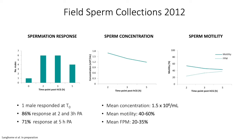Sperm concentration averaged around 1.5 million per male across the collection period, similar to the captive population. Motility was between 40 to 60%, with 20 to 35% exhibiting forward motility — much lower than our lab studies where average was around 80%. This was perhaps explained by an inefficient cooler; samples were likely not maintained at consistently cool temperatures on a warm day. Since samples were stored for up to 12 hours prior to analysis, this likely had a detrimental effect on sperm quality, but it was a valuable lesson to invest in a decent cooler for next time.